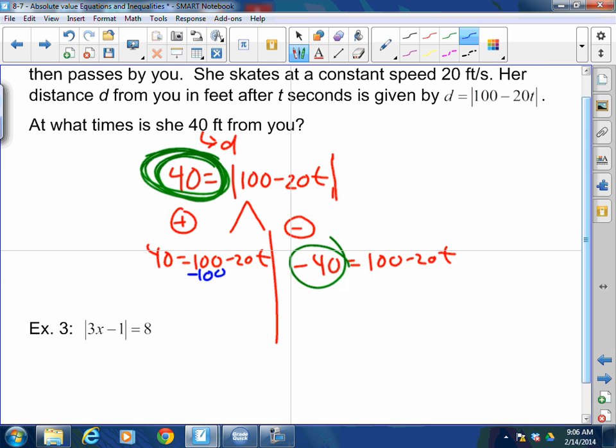So now subtract the 100. -60 = -20t. Divide by negative 20. So t = 3.